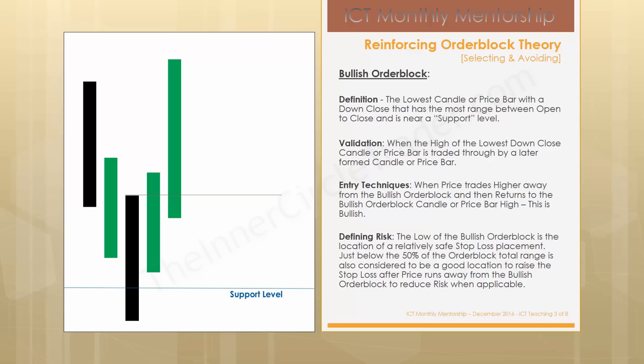Large flows or institutional traders have the capacity to move price, whereas we as retail or smaller traders — in terms of respect of a bank or a large entity in an institutional capacity — we can't move the marketplace. But they as a whole collectively can. So what we do is we wait. We're patiently watching price, anticipating it to start to retrade back down into that down candle or bullish order block's high.